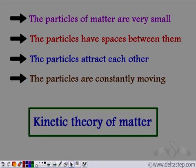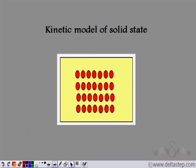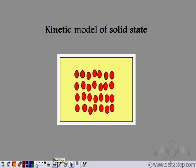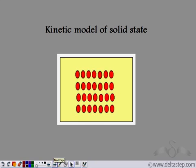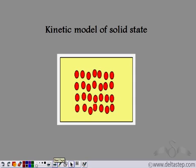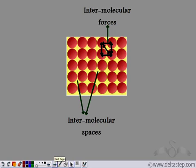Based on this theory, we get the kinetic model of the three states. This is the kinetic model of the solid state, according to which the particles are very close to each other and they vibrate about their mean positions. Since the particles in the solid state are very close to each other, the inter-molecular spaces between them are very small, and that is why the inter-molecular forces between the particles are very strong. In solids, the inter-molecular spaces are small, which is why the inter-molecular forces are very strong.